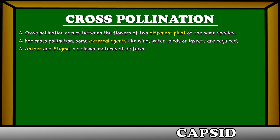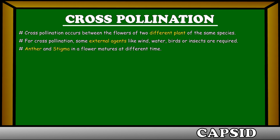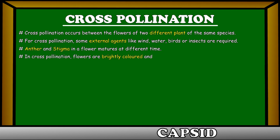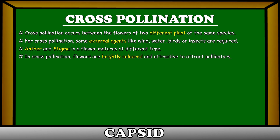Reproductive parts, that is, anther and stigma in a flower, mature at different times. In cross-pollination, flowers are brightly colored and attractive to attract pollinators.